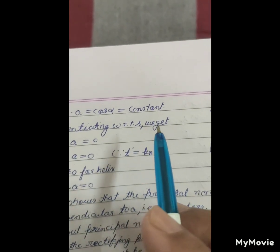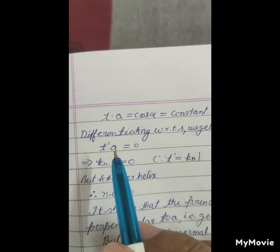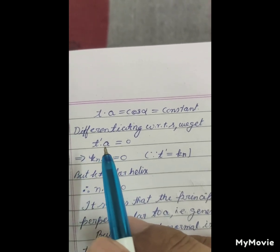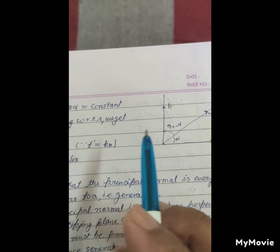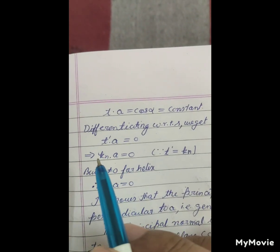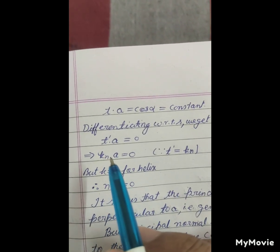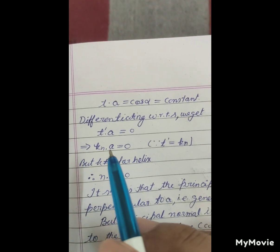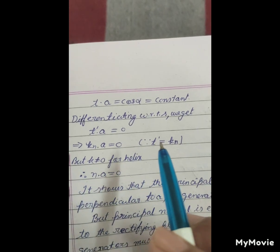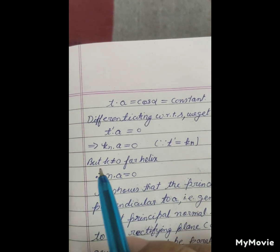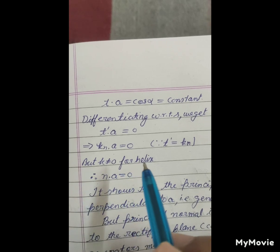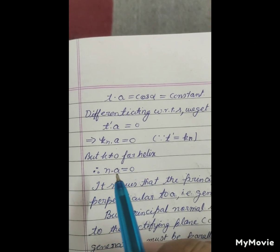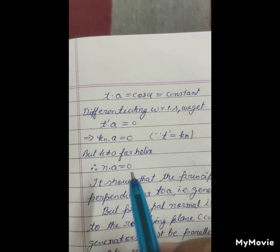Differentiating with respect to s, we get t dash dot A equals 0, which implies kn dot A equals 0, because t dash equals kn. But k does not equal 0 for helix, so n dot A equals 0.